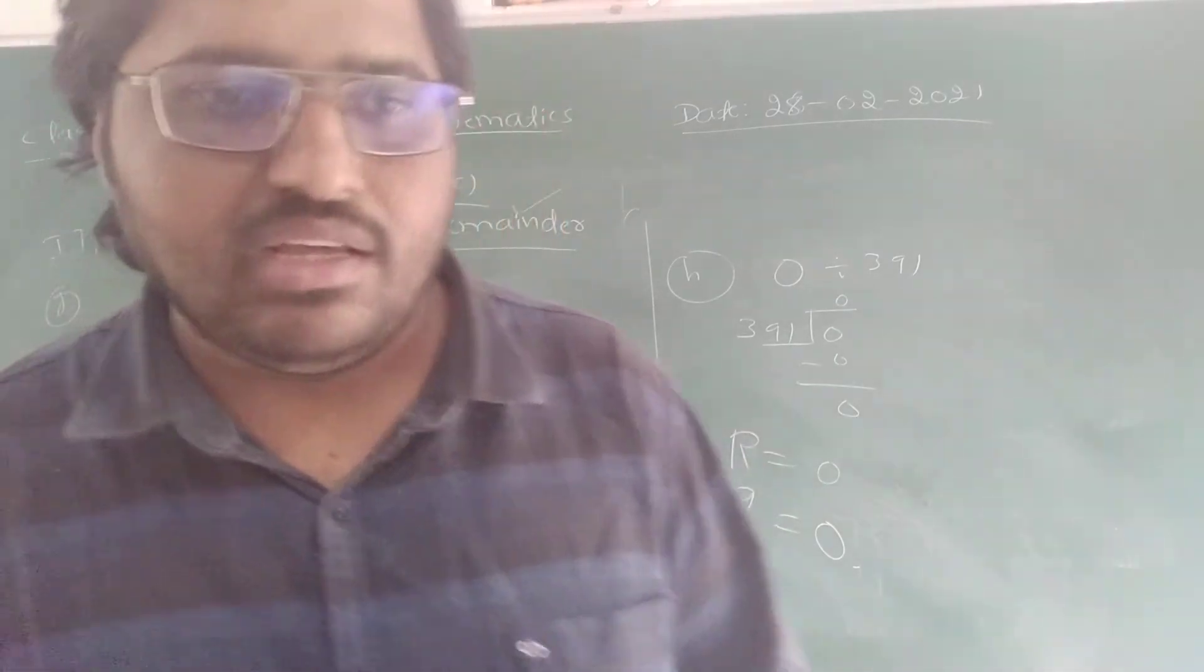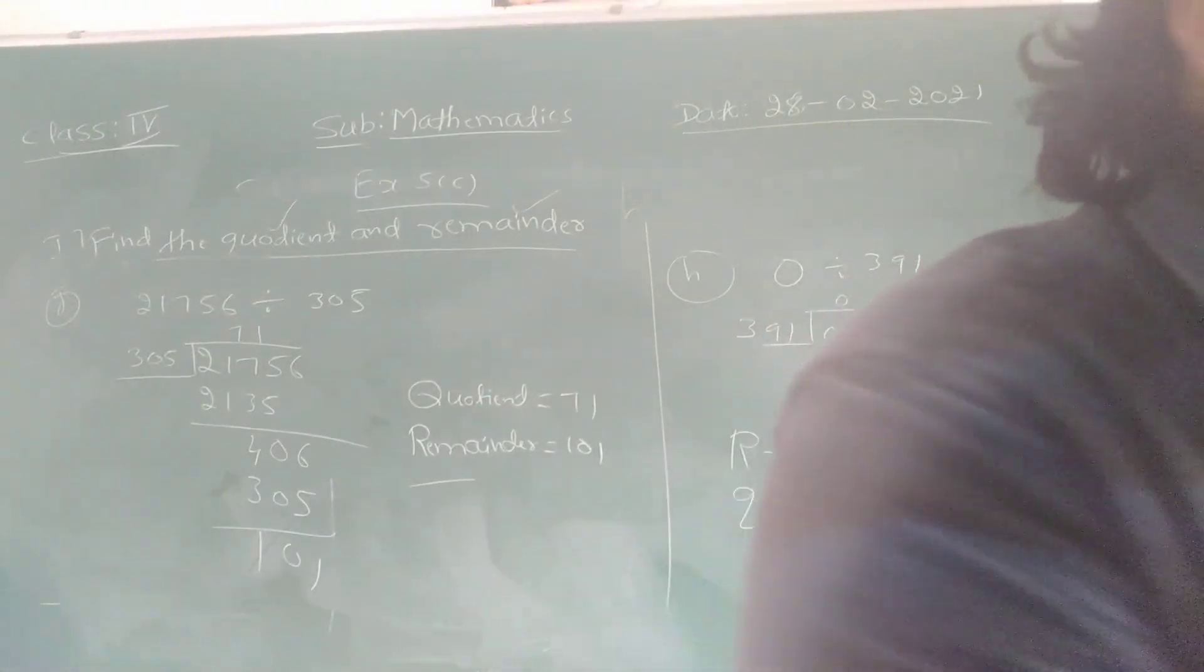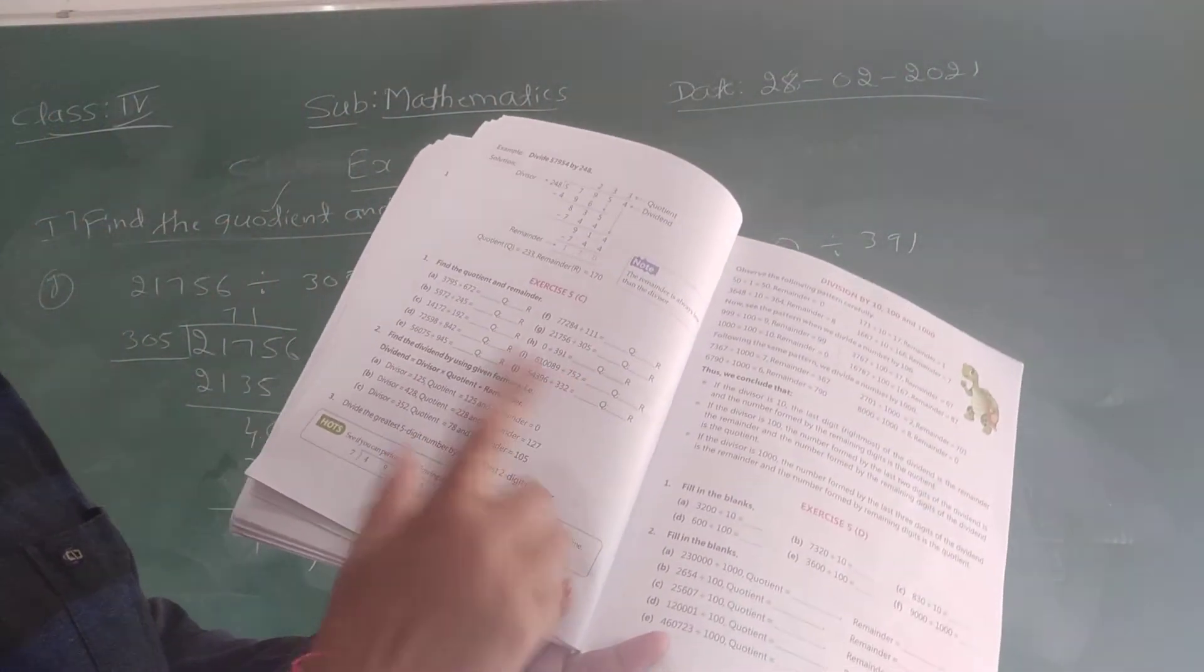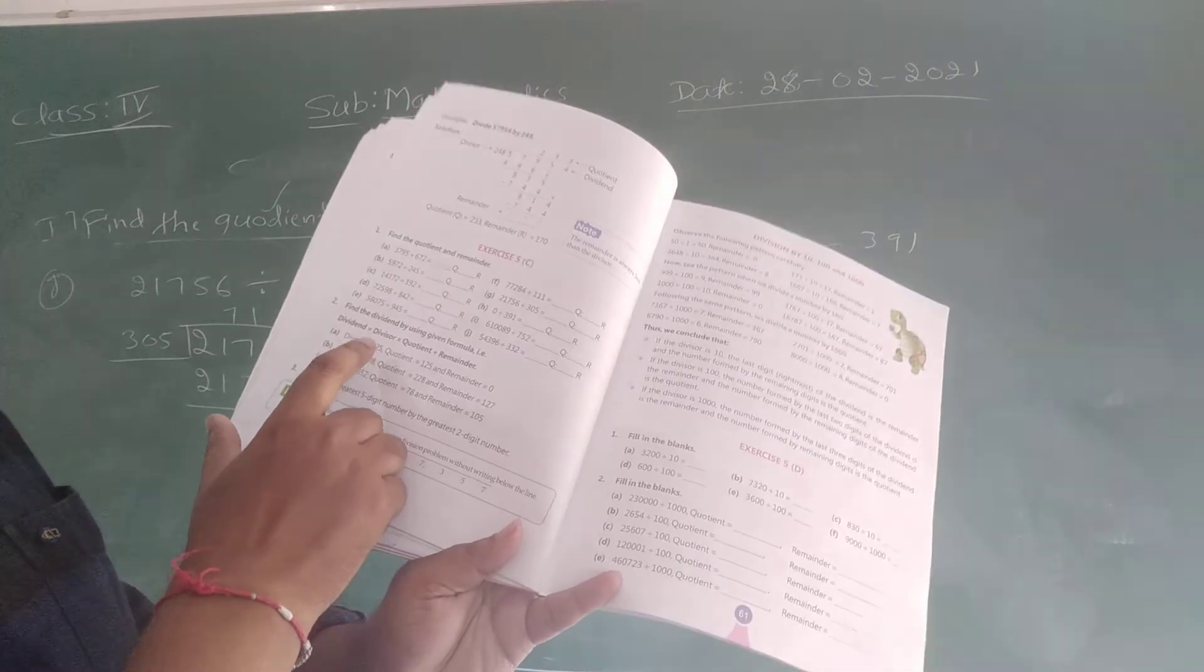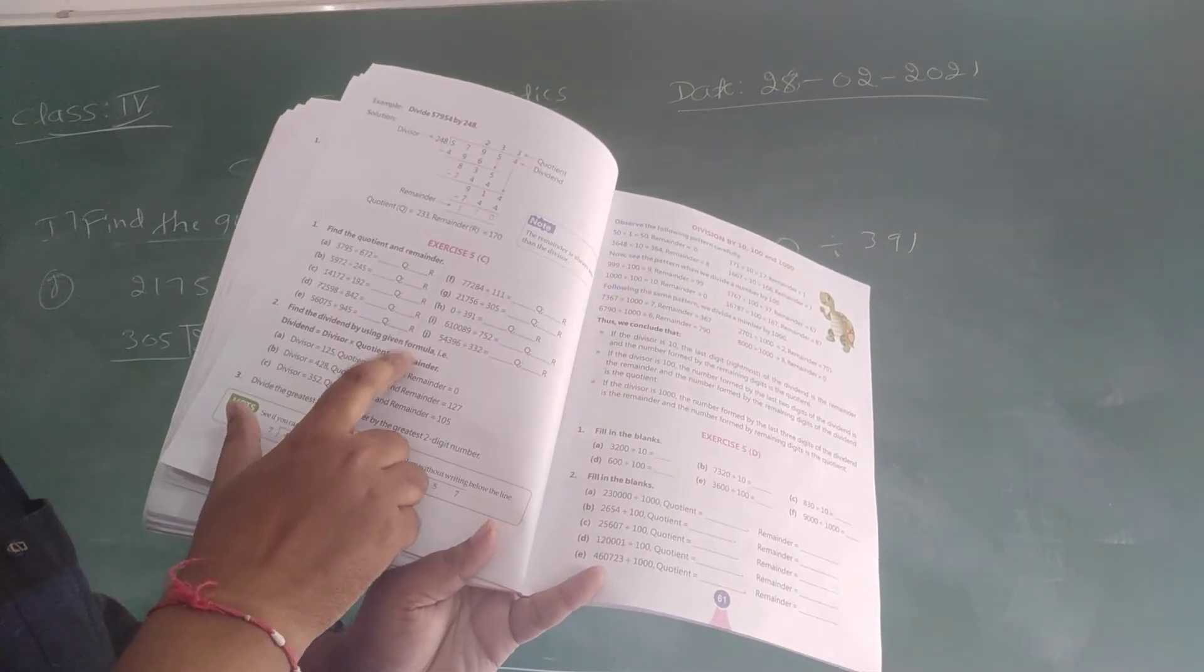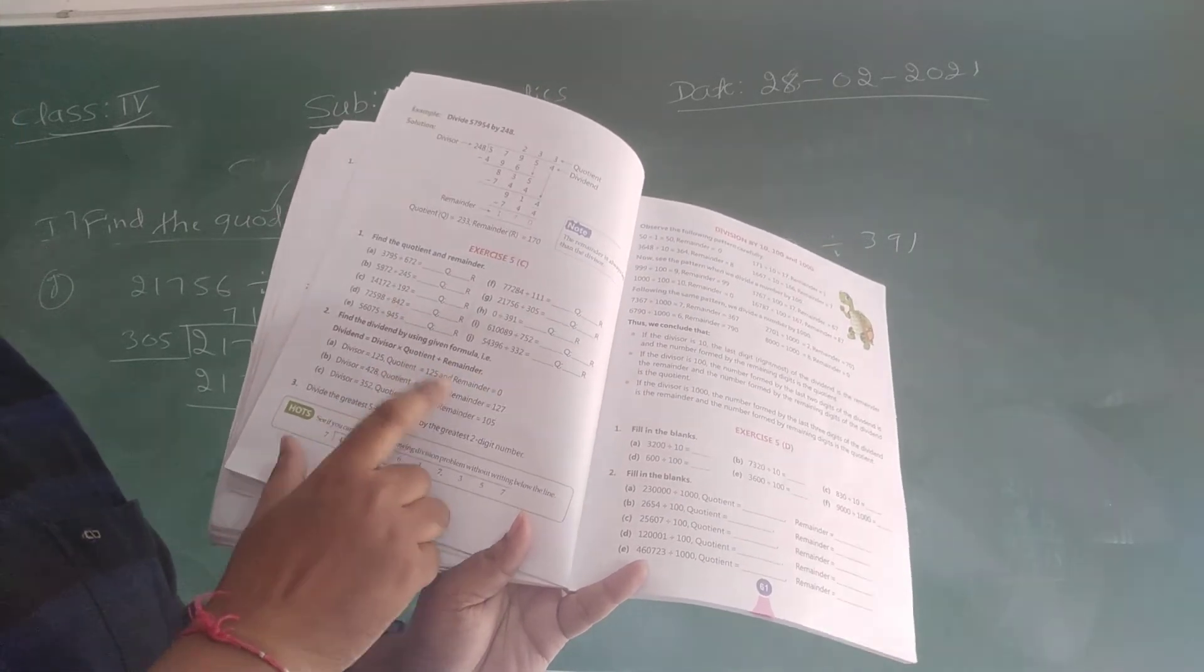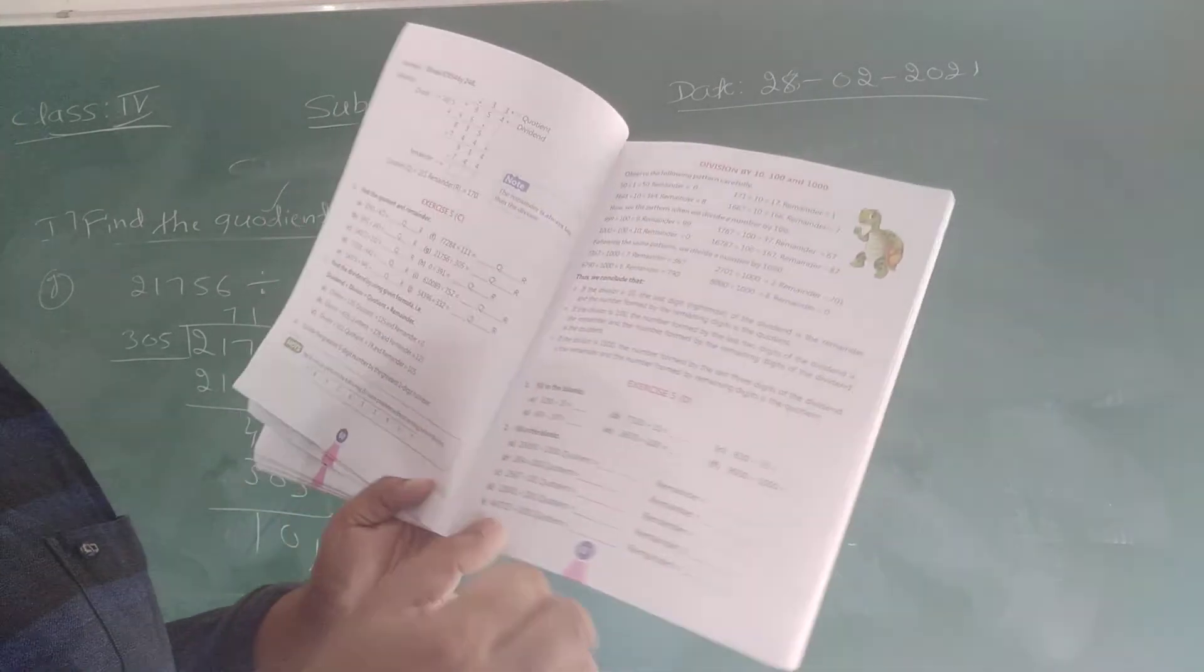So children, now remaining questions, that is question number i and question number j you have to do yourself. And second, find the dividend by using the given formula. That is dividend equals to divisor into quotient plus reminder. I am going to teach you this in the next video.